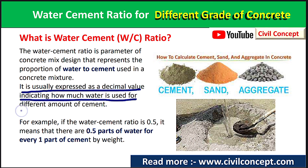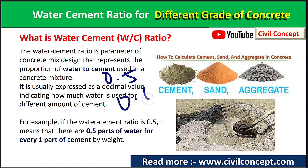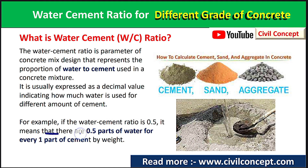The water-cement ratio is usually expressed as a decimal value indicating how much water is used for a given amount of cement. It is always expressed as a decimal — for example, 0.4, 0.5, or 0.6.